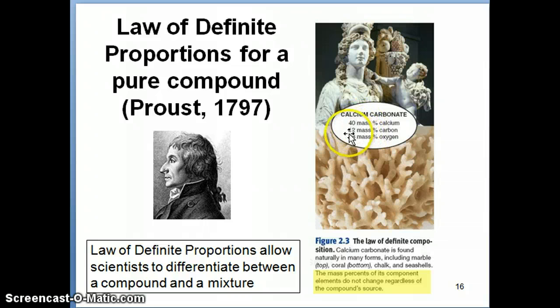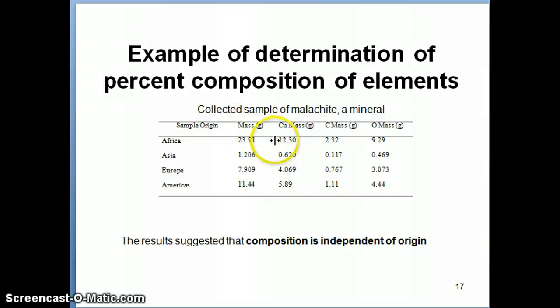So in this case, for calcium carbonate specifically, it's always going to be 40 mass percent of calcium, 12 mass percent of carbon, and 48 mass percent of oxygen, regardless of where you get the calcium carbonate sample from. So another example is shown right here. So how do you determine this mass percent composition? It's fairly straightforward. Let me just show you an example right here.